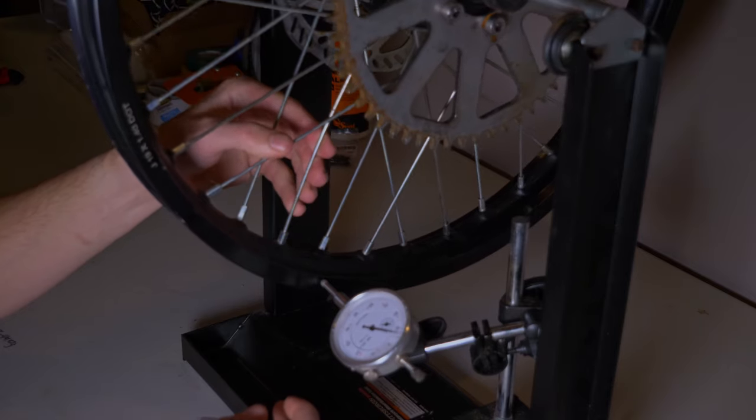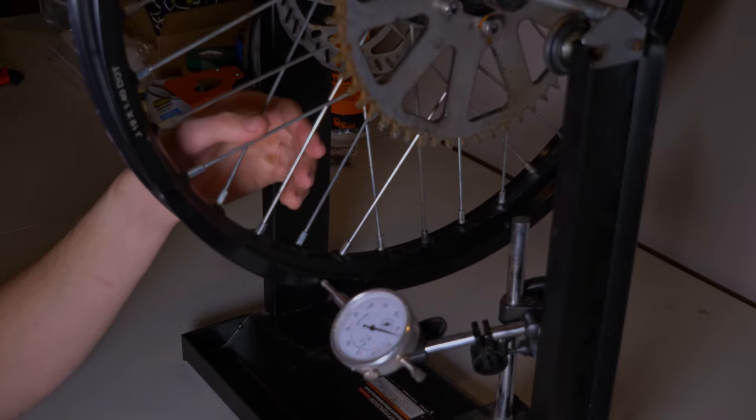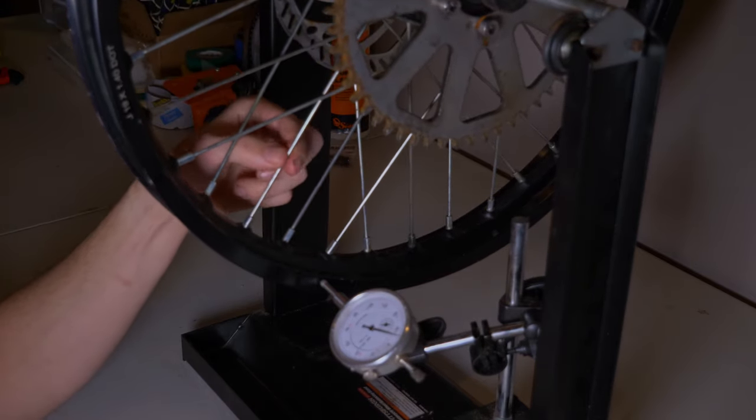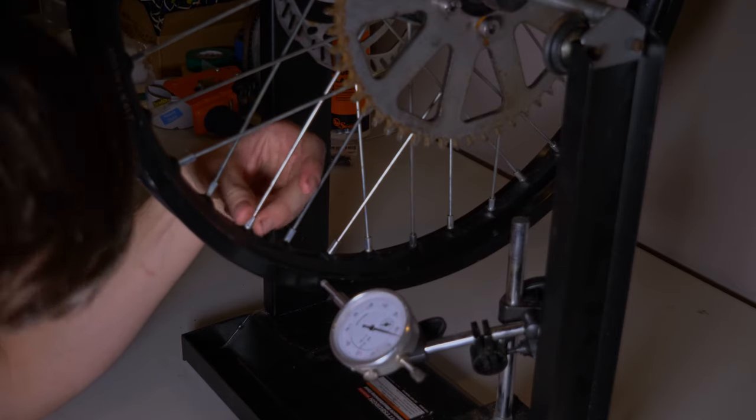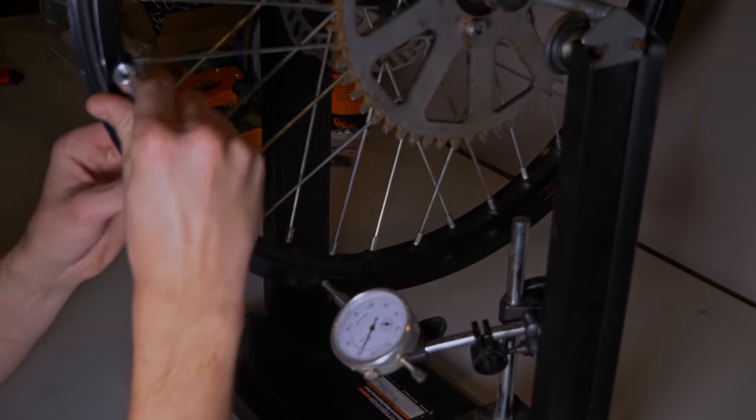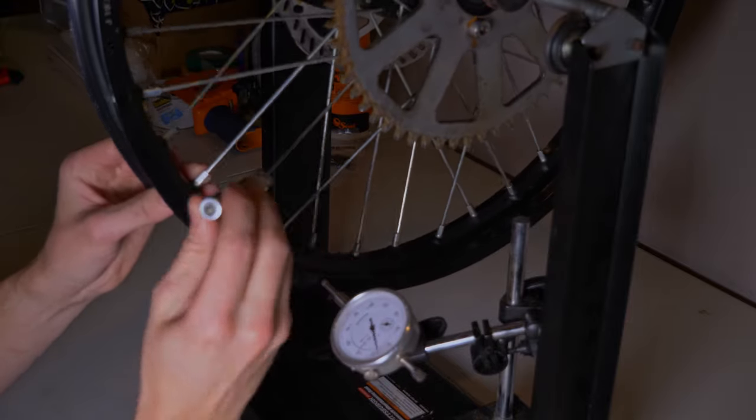So I'm just going to start out by feeling these spokes. And if they're loose, like that guy right there, I'm going to tighten her up by hand a little bit and give her a couple turns until she's feeling snug.